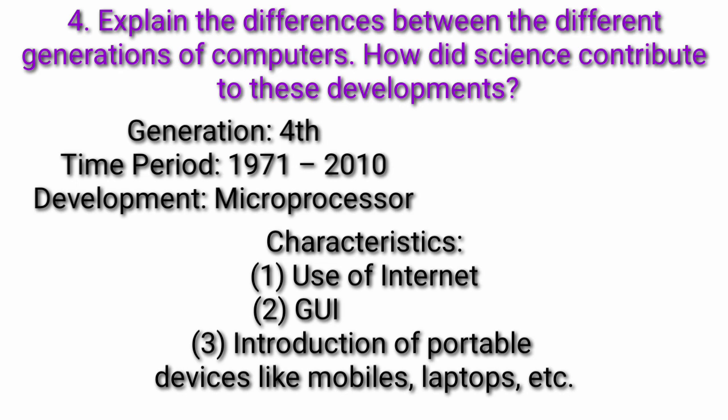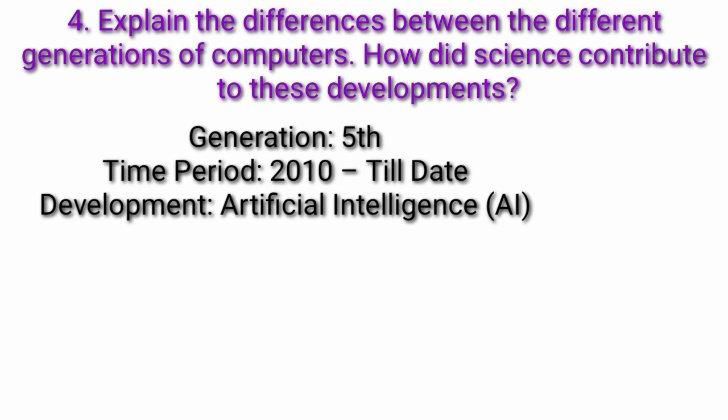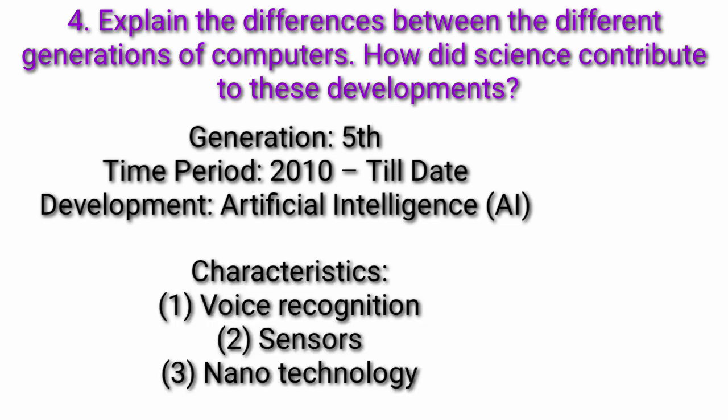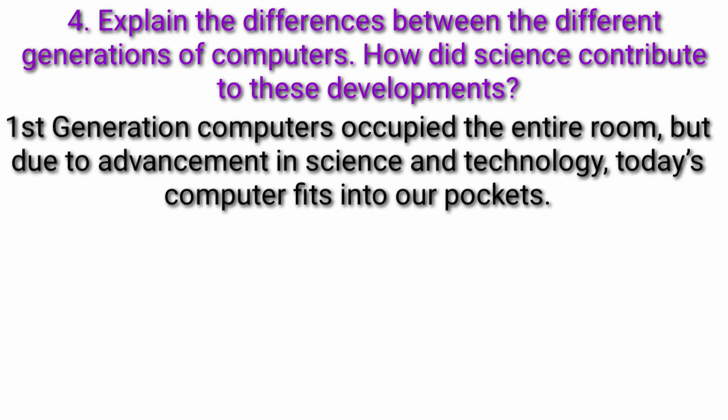Characteristics: Use of Internet, Internet GUI, Introduction of portable devices like mobiles, laptops, etc. Generation 5th, Time period 2010 to till date, Development: Artificial Intelligence AI. Characteristics: Voice Recognition, Sensors, Nanotechnology. 1st Generation Computers occupied the entire room, but due to advancement in science and technology, today's computer fits into our pockets.